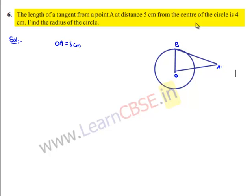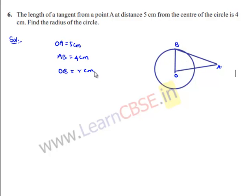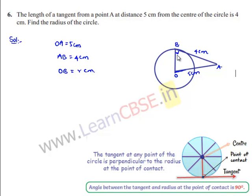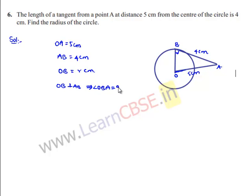We know that the tangent is always perpendicular to the radius at the point of contact, so OB is perpendicular to AB and angle OBA = 90°. By Pythagoras theorem in triangle OAB: OA² = AB² + OB², which gives 5² = 4² + R².